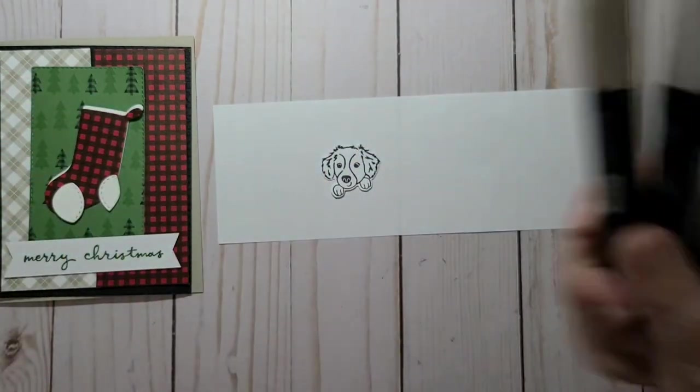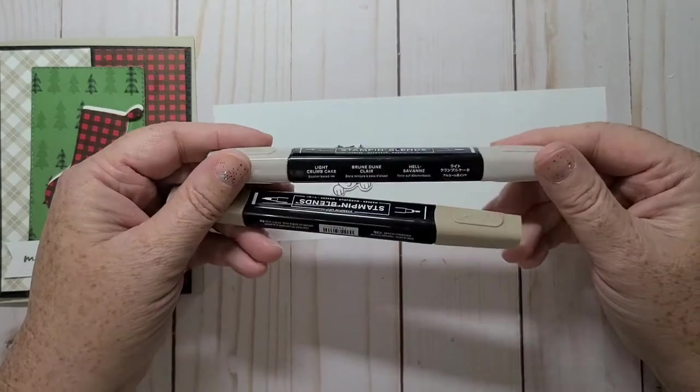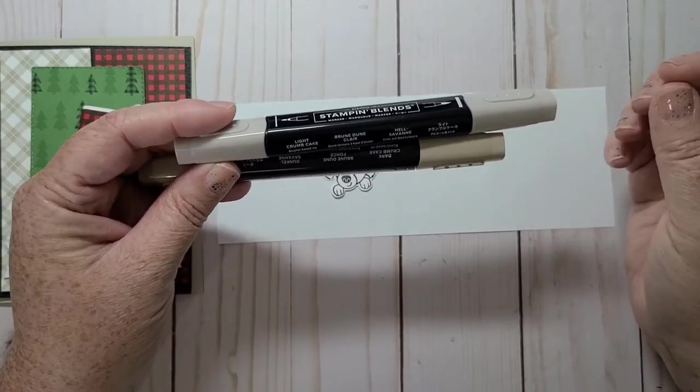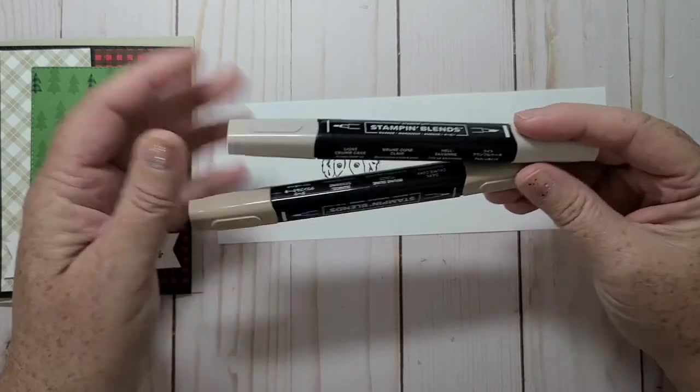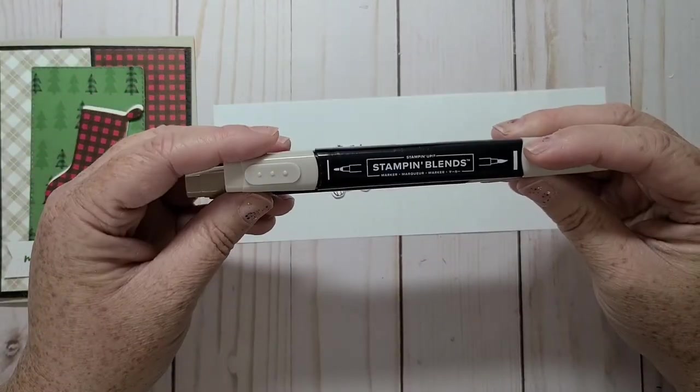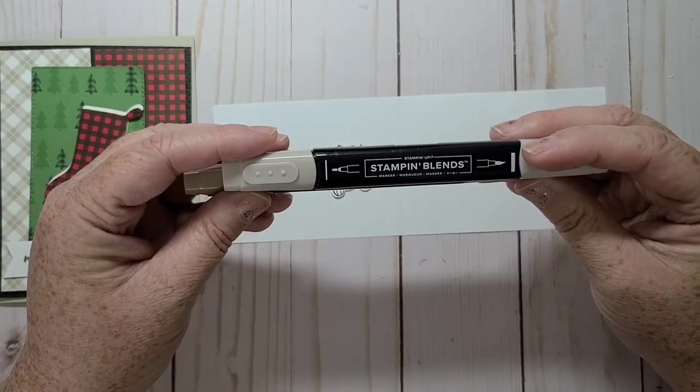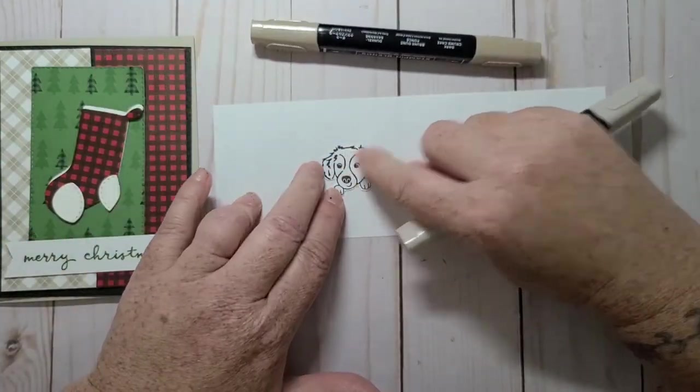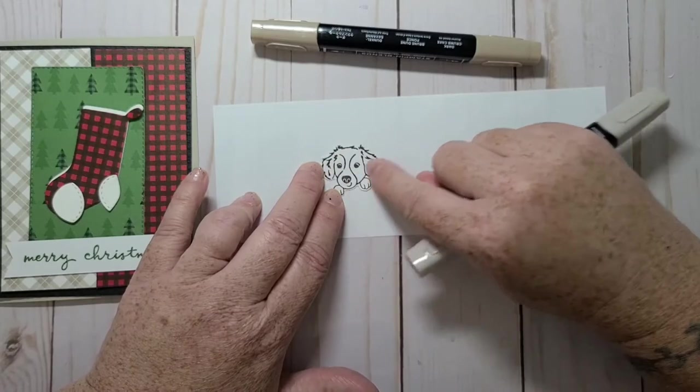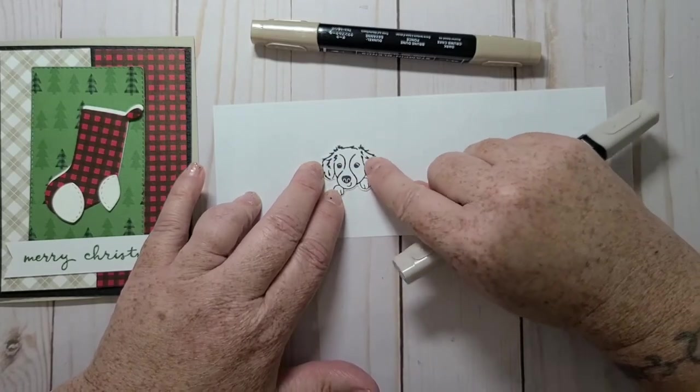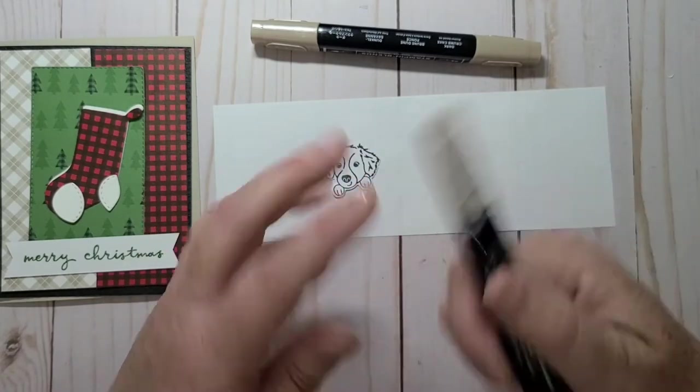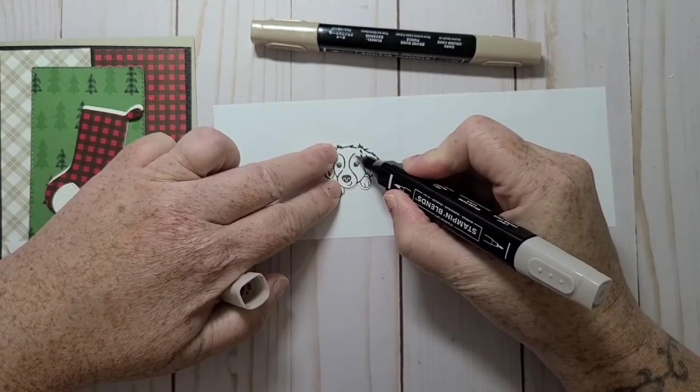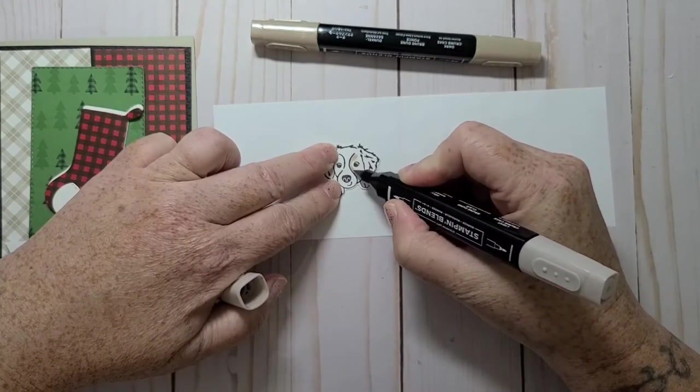Oh, I feel so bad. Okay, so I think I'm just gonna set this aside and I'm gonna bring in my little dog and I think I'm just gonna color him in light and dark crumb cake. And I've never colored this little doggy before, so I'm not sure, but I think I want light crumb cake around his eyes.